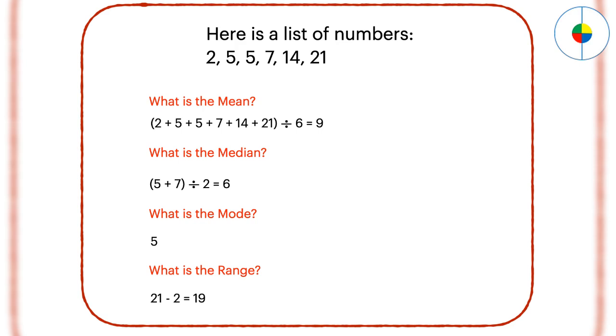Mode: the item in a data set that occurs most often. There could be one mode, more than one mode, or no mode.